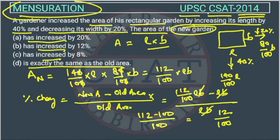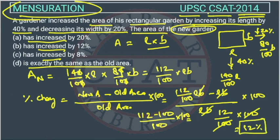So the percentage change - we will put 100 here also. The 100 will come here because this is percentage change. So 100 will cancel this 100. This is 12 percent because this value is positive, so there is an increase. If this value is negative, it means the area got decreased. In this case, the value is positive, so the area got increased. So the answer is option B.